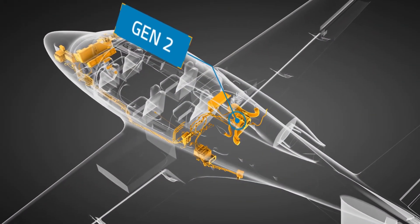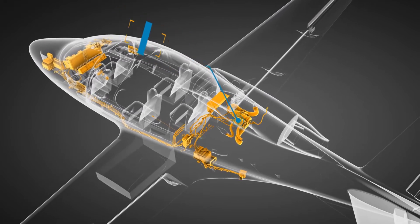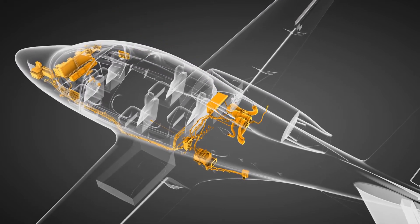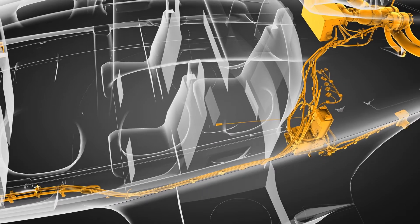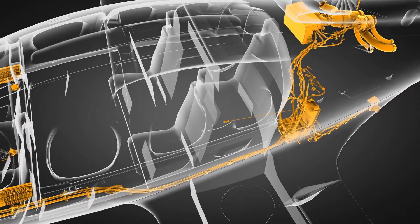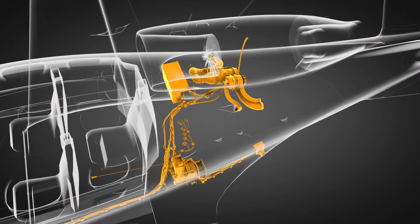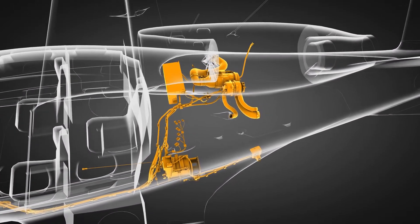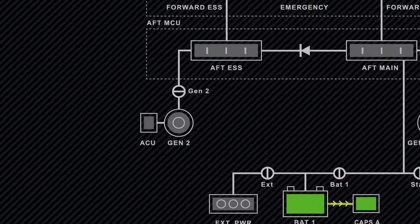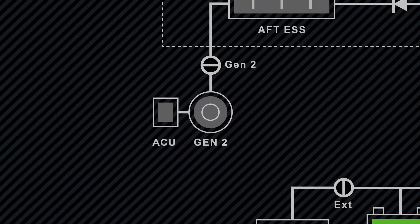Now, let's look at Generator 2. Technically, this 28-volt, 72-amp unit is an alternator, but it's internally rectified to put out direct current, so we will refer to it as a generator. Like Gen 1, it is installed on the engine accessory gearbox and output is controlled by an alternator control unit, or ACU.